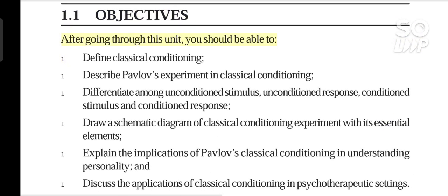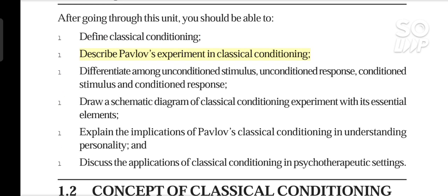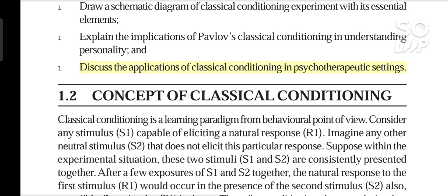After going through this unit, you should be able to: define classical conditioning; describe Pavlov's experiment in classical conditioning; differentiate among unconditioned stimulus, unconditioned response, conditioned stimulus and conditioned response; draw a schematic diagram of classical conditioning experiment with its essential elements; explain the implications of Pavlov's classical conditioning in understanding personality; and discuss the applications of classical conditioning in psychotherapeutic settings.